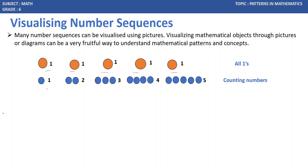Let us see the second one. One circle, two circles, three, four, five. So what are 1, 2, 3, 4, 5? What do we use these numbers for — counting numbers? Another name for this sequence is Natural Numbers.